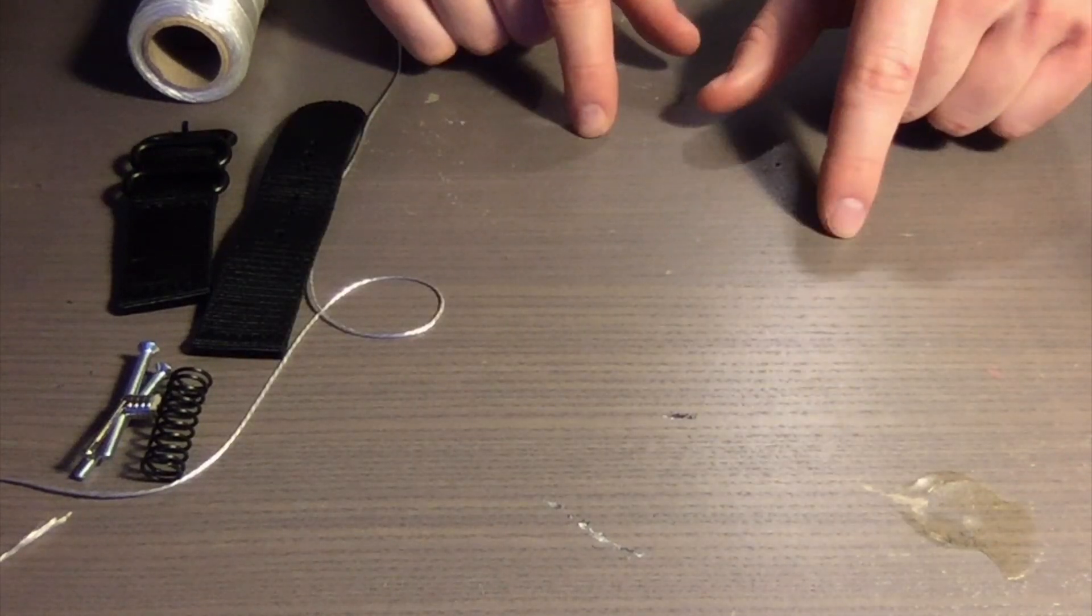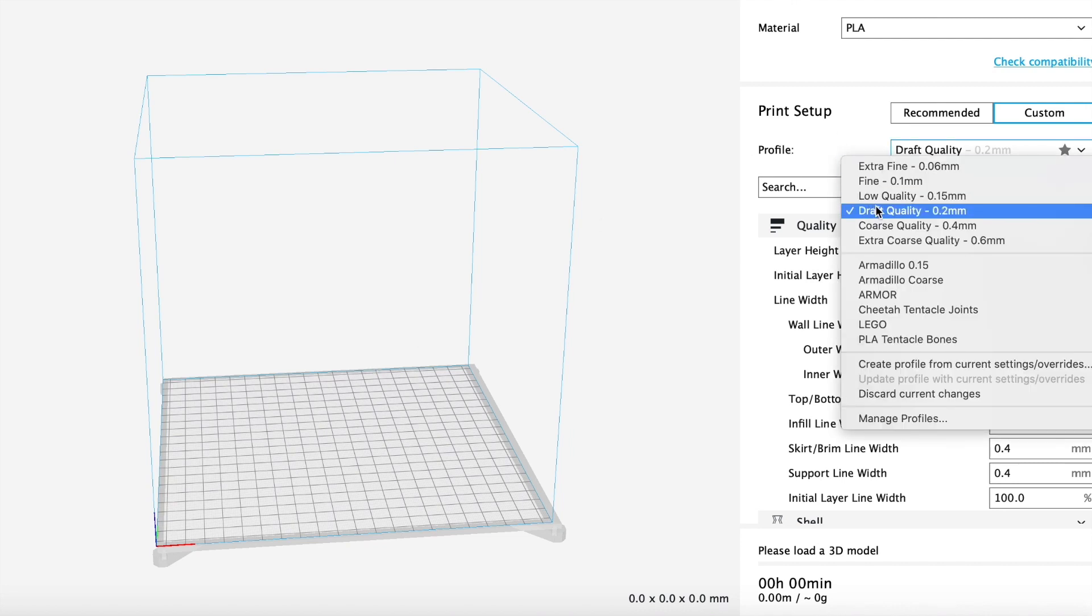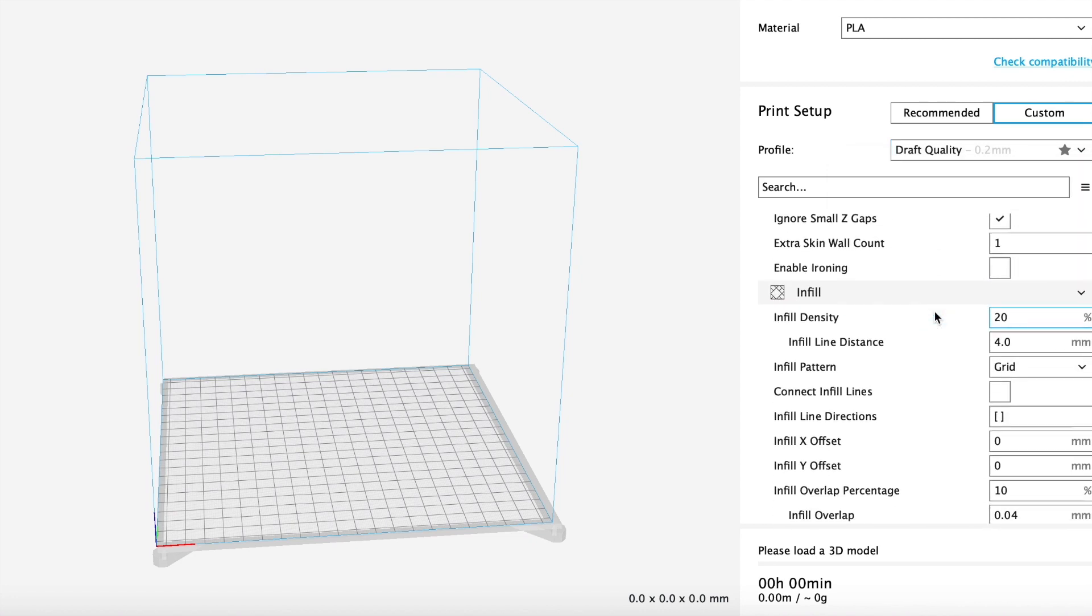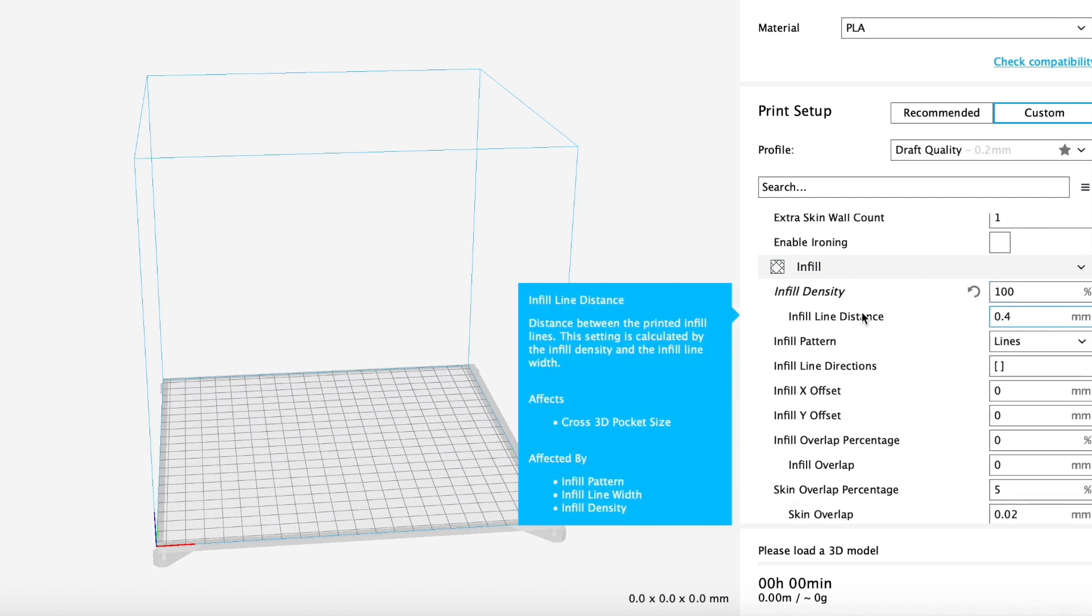Once you have those STLs you can go ahead and print the files. I'm going to be printing this in PLA plastic and there's no need to go super fine on the layer height, so I'm just going to be using 0.2 millimeters.